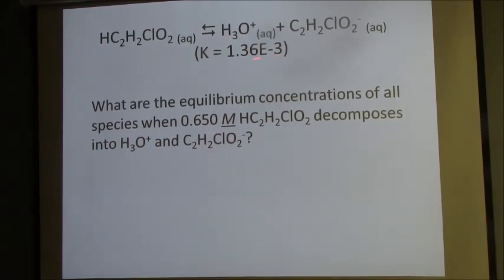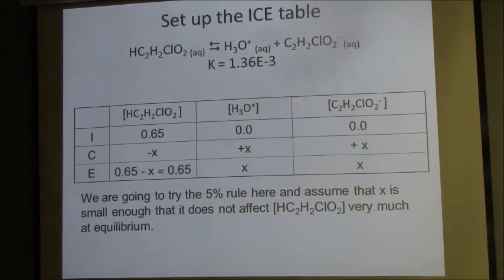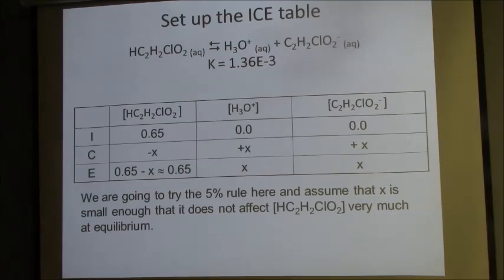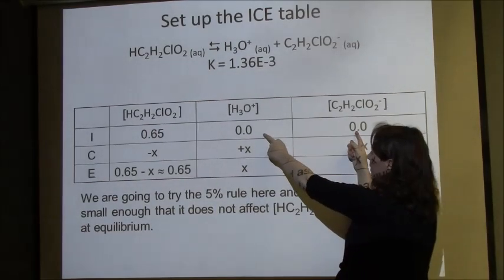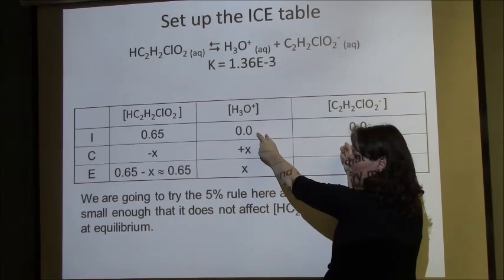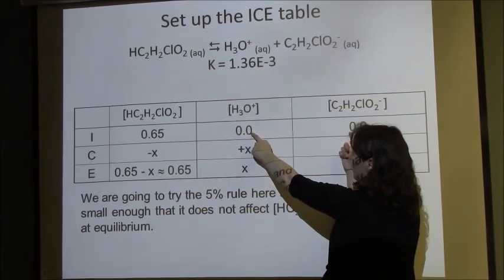Because K is less than 1, we're going to do the 5% approximation. We're going to set up our normal ICE table. This is the initial concentration. Because I wasn't given any information about the products initially, we're assuming that they are 0, because we don't know anything about the products yet.